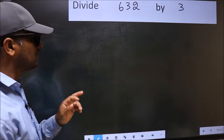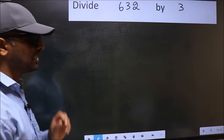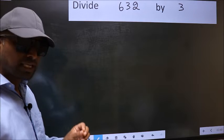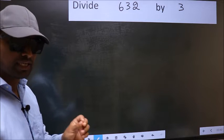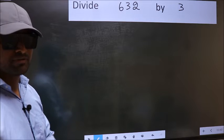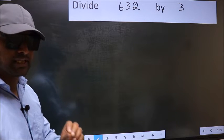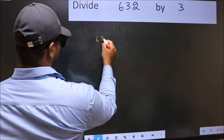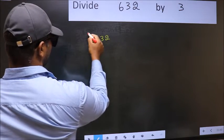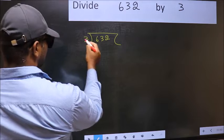Divide 632 by 3. While doing this division, many do this mistake. What is the mistake that they do? I will let you know. But before that, we should frame it in this way. Okay. 632 and 3 here.